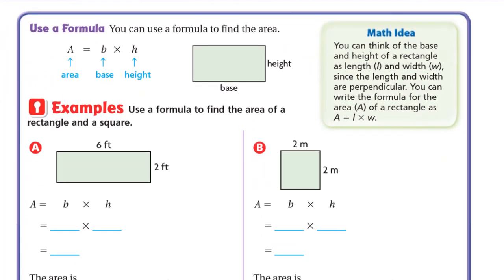So this is the formula we derived. You can use the formula to find the area: A stands for area, B stands for base, H stands for height. So if you have any rectangle, you can use the base and the height to get the area by multiplying them.